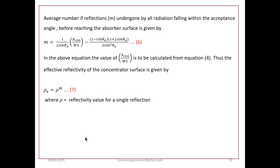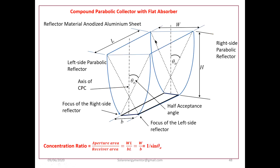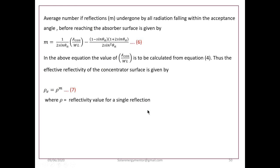Now the average number of reflections m undergone by radiation: when solar energy is incident on the surface, a ray may have multiple reflections before falling on the absorber — it may not go directly to the absorber in one reflection. The average number of reflections undergone by all radiation falling within the acceptance angle, before reaching the absorber surface, can be evaluated using: m = (1 / 2 sin θ_a) × [A_con/W − 1 − sin θ_a × (1 + 2 sin θ_a) / (2 sin² θ_a)].